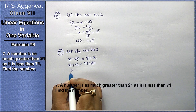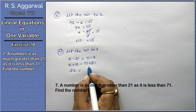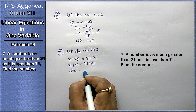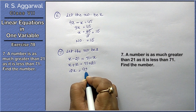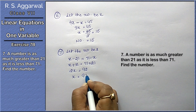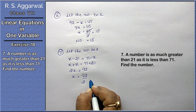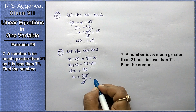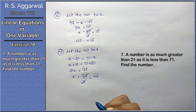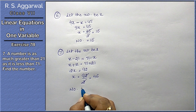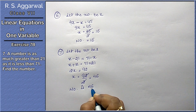Bringing x terms to one side gives 2x equals 71 plus 21, which is 92. Therefore x equals 92 divided by 2, which is 46. Hence the number is 46.